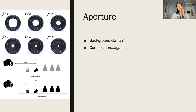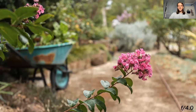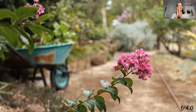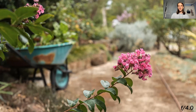If you have a smaller aperture — so a larger number — it allows you to focus on more things. As an example, here's a scene from our garden — mum's beautiful garden out the front. This has a fairly open aperture, F4, and that makes what is in focus a very narrow area. You can see just that flower and the branch it's on is in focus and everything else is very blurred.